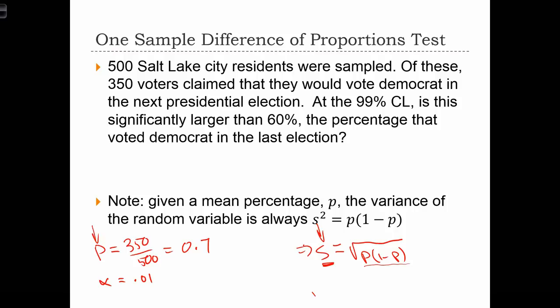And we can calculate S as the square root of P times 1 minus P. So 0.7 times 0.3. This is going to give us 0.46.